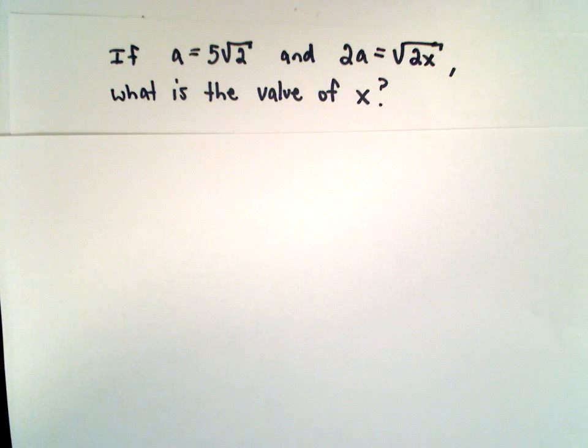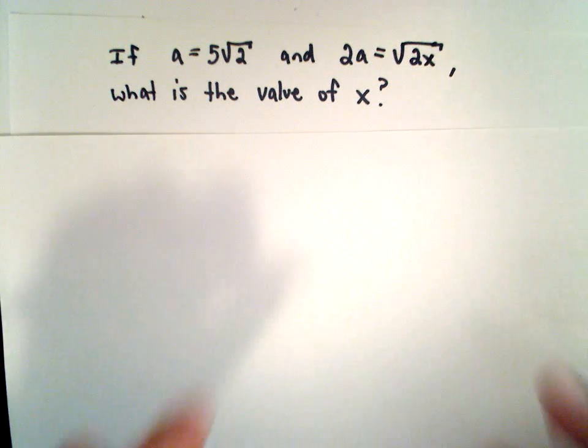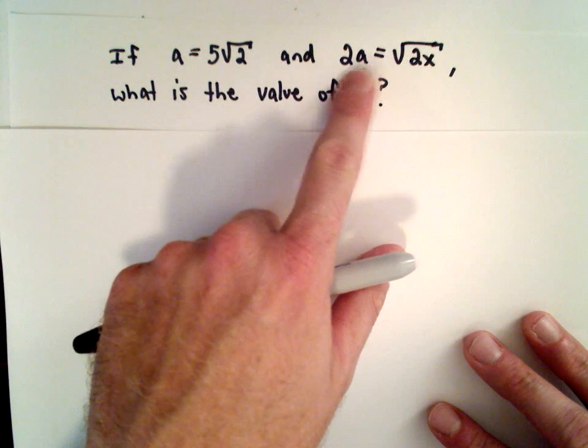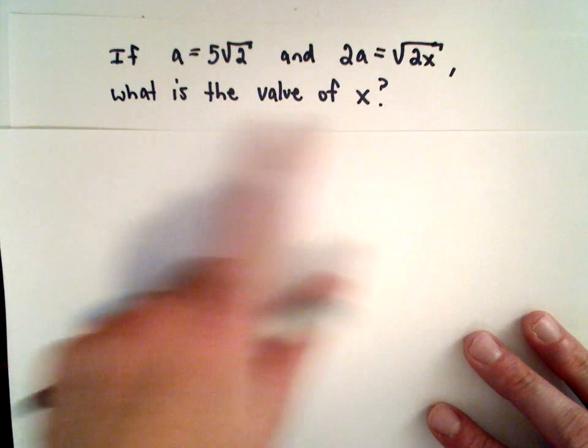This is the last problem from the first section of the SAT practice test, the last problem where you are not allowed to use a calculator. We're given that a equals 5 multiplied by the square root of 2, and 2 times a equals the square root of 2x. We want to know the value of x. This one is just a matter of doing a substitution.